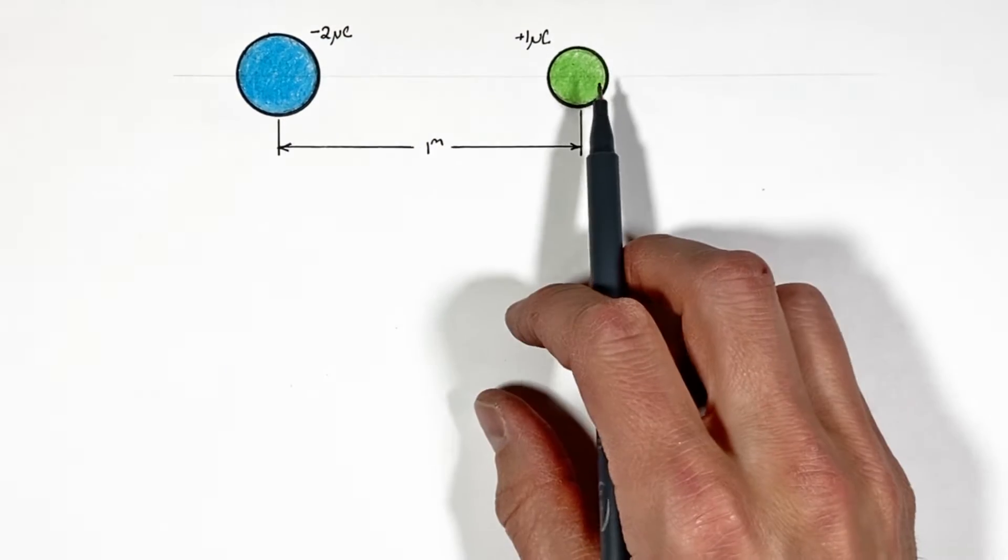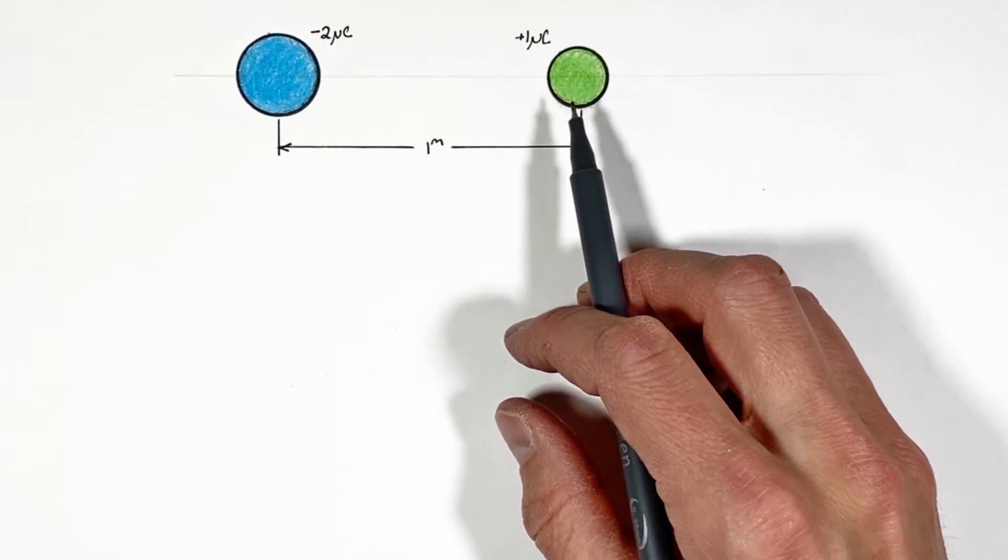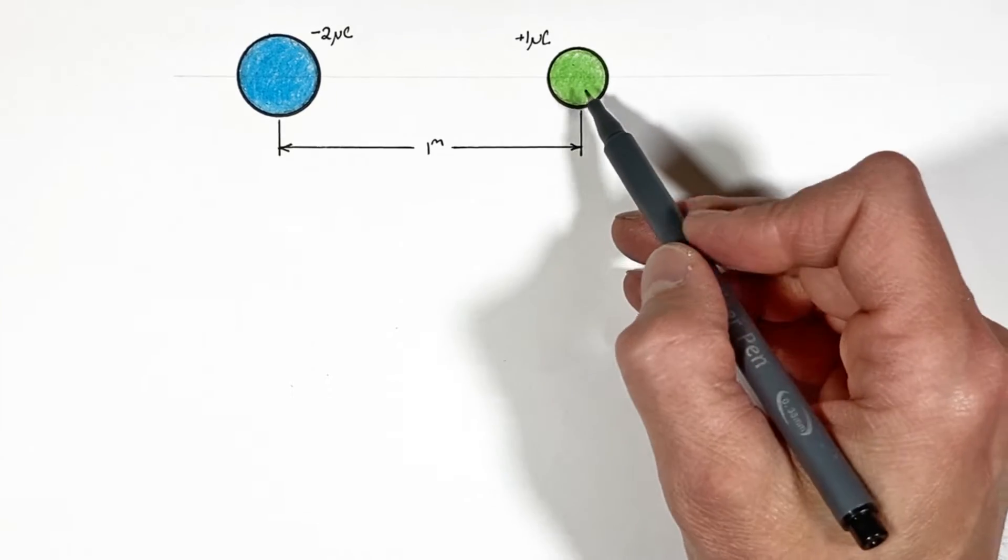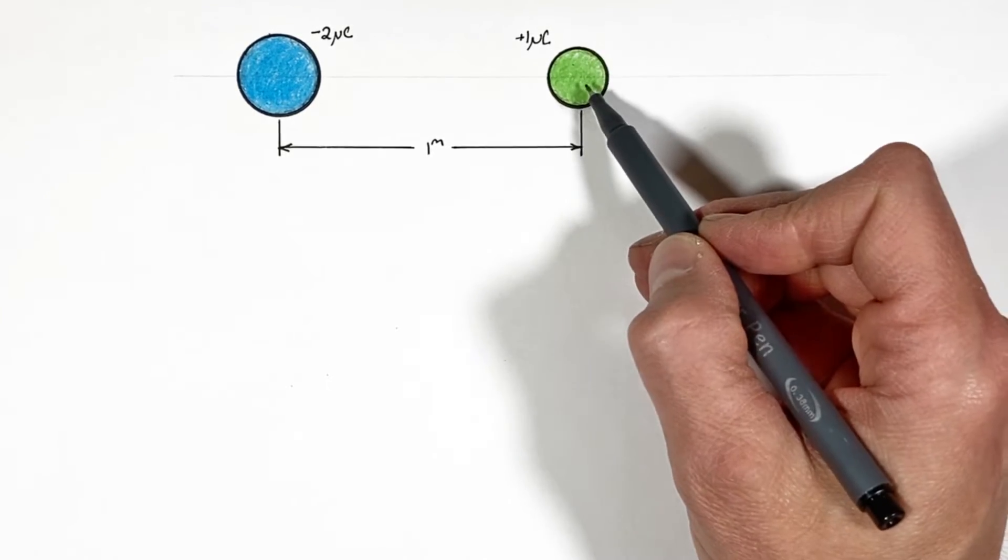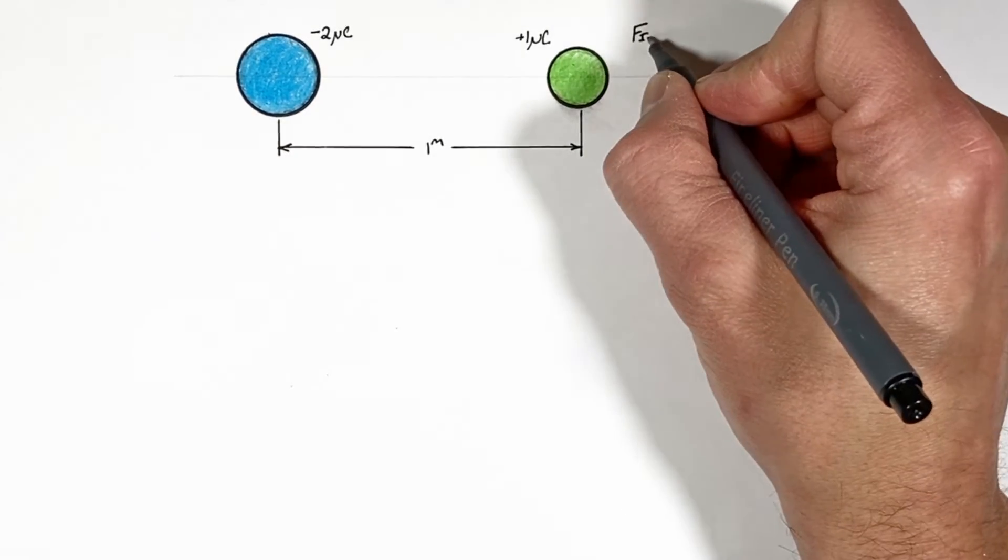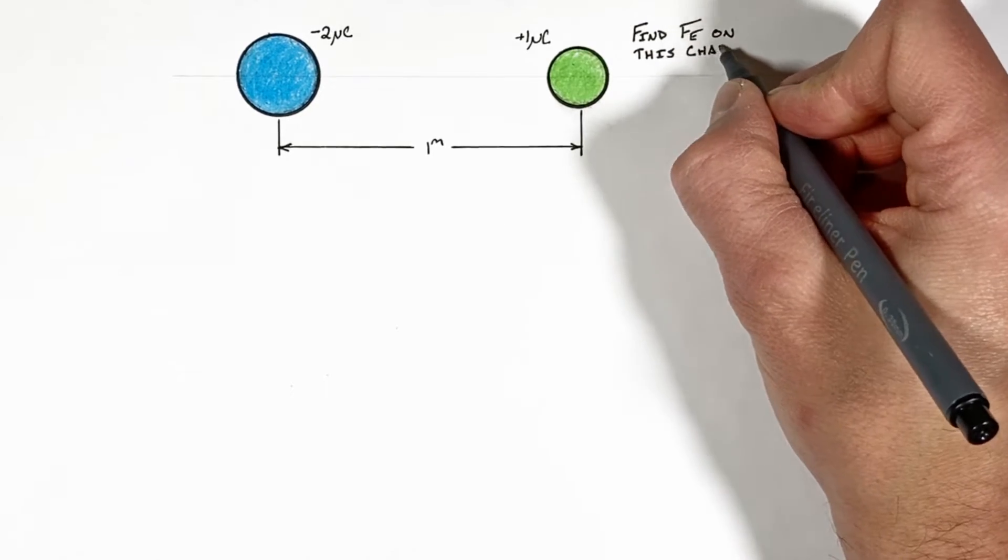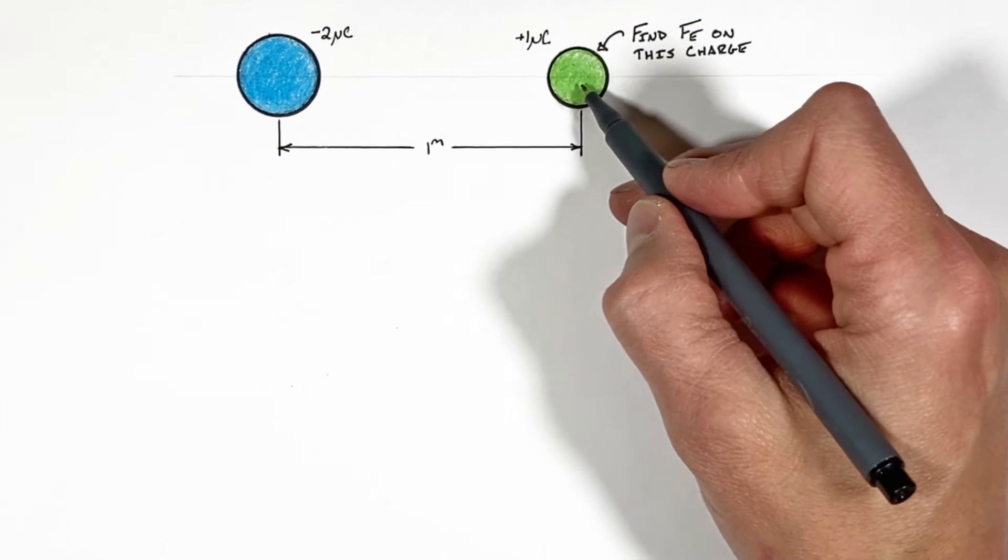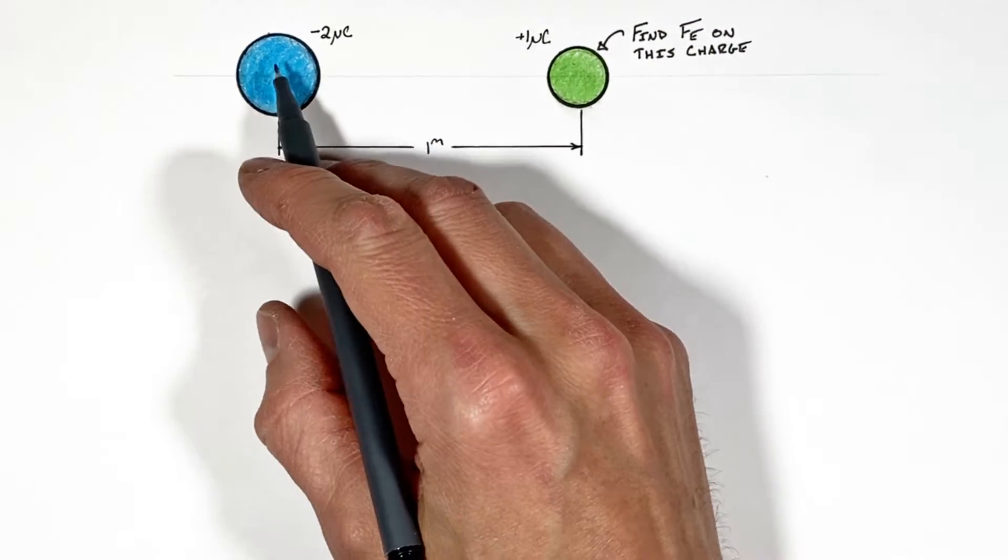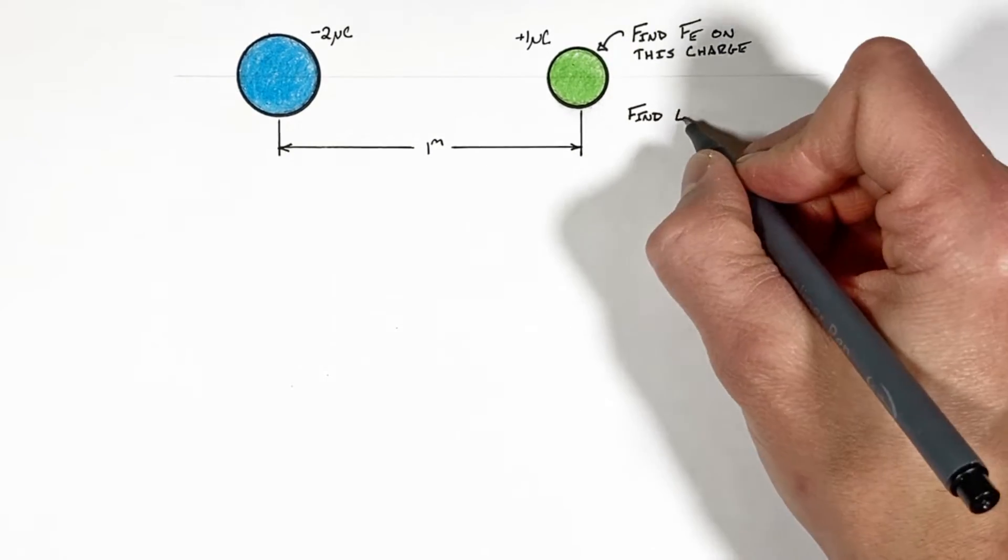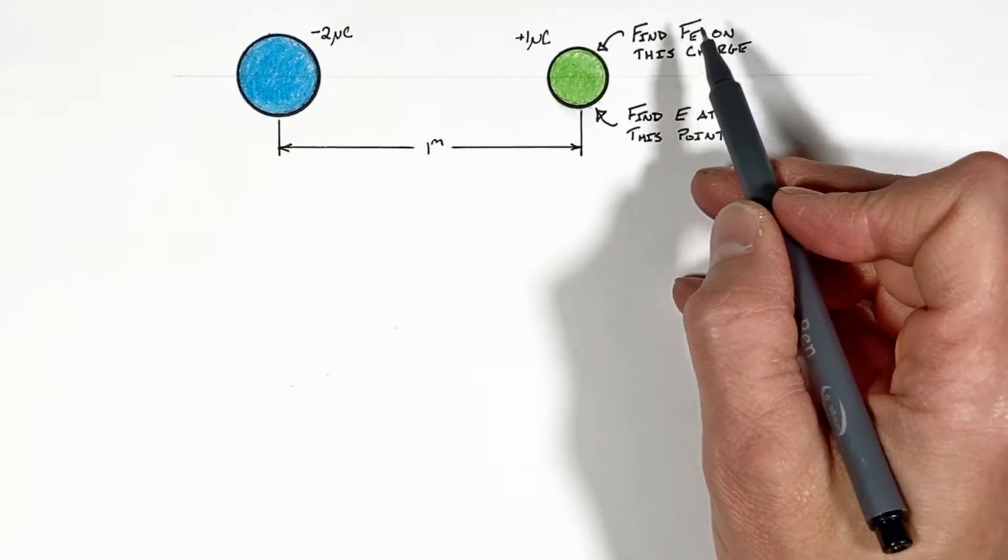Alright YouTube, today we have two charges which have been placed a certain distance apart. In this problem we're going to solve for the force on one charge as a result of the other, and we're also going to solve for the electric field at this point as a result of this charge.